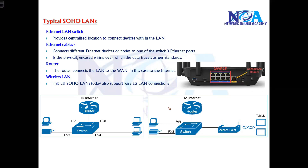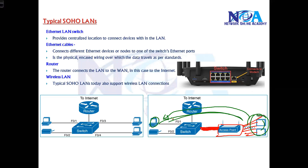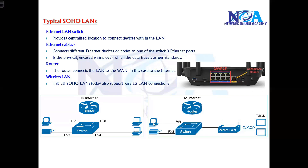If you're using wireless connections, an ethernet cable will connect to an access point, and this access point connects to the wireless network, allowing communication from your wired network to the wireless network as well. This is a typical small office and home office LAN.